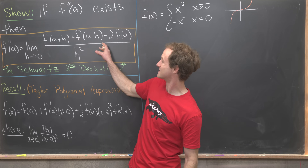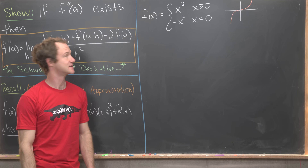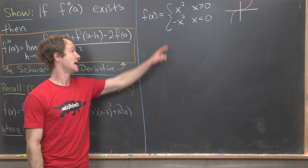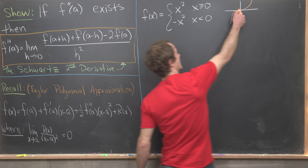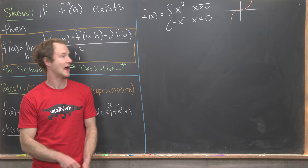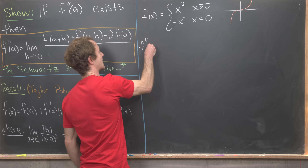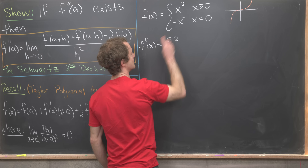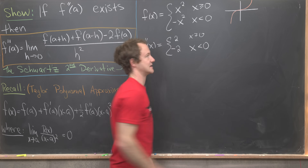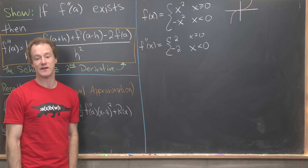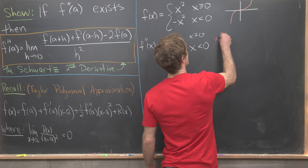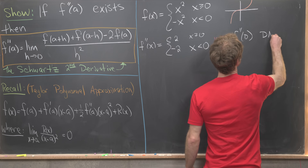We're going to look at an example where this limit exists but the second derivative does not exist. The example is the piecewise function defined by x squared if x is greater than or equal to zero, and minus x squared if x is less than zero. That's an upward-facing parabola on the right and a downward-facing parabola on the left. Taking the second derivative piecewise gives us two if x is greater than or equal to zero, and negative two if x is less than zero — something like the derivative of the absolute value function. The takeaway is that f double prime of zero does not exist.